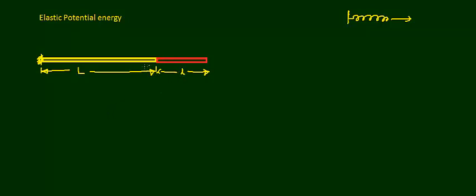We need to find the work done for this elongation. The interesting thing is that as the wire expands, the work done keeps changing because the force required for elongation keeps changing. For example, the force required for one millimeter elongation at one point would be different from another. Since force is variable, we use integration to find the work done.